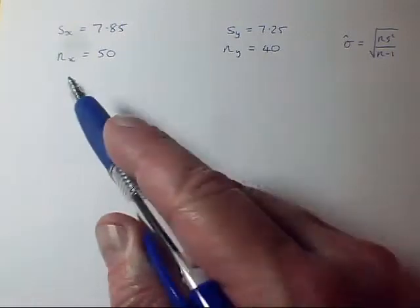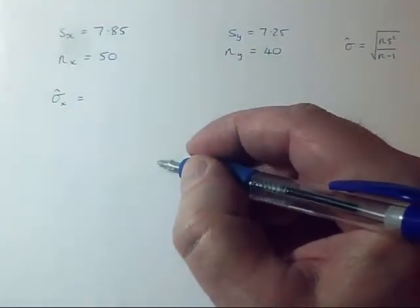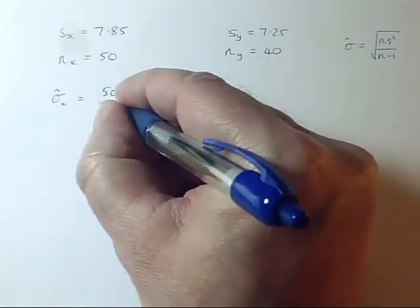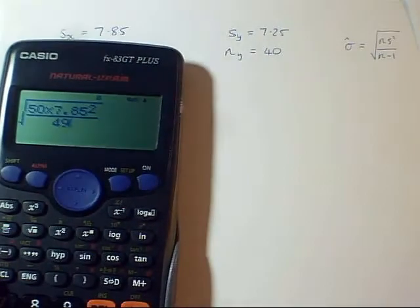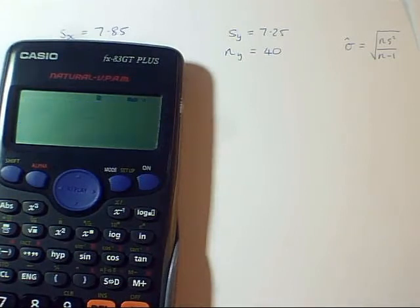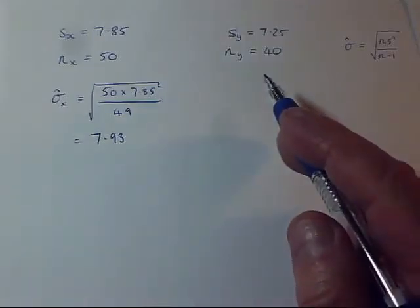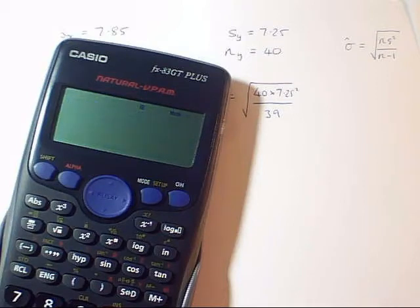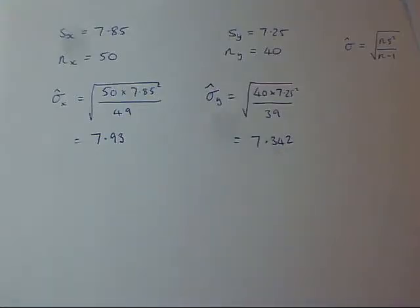Here's the first formula I need to use to estimate a population standard deviation from each of these S values. I'm going to apply it first for the X's to get an estimated sigma for the X's. That is N, which is 50, times 7.85 squared, divided by N minus 1, which is 49, and I need the square root of all of that. On the calculator that gives 7.9296, so I'll round to 7.93. Then I do the same calculation for the Y population, entering those numbers, and we get 7.342. Now I've got my two estimated standard deviations set up and I'm ready for the next step.